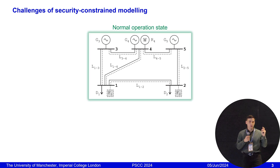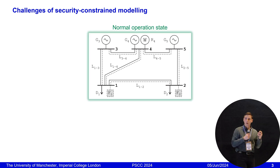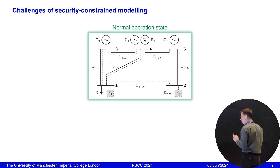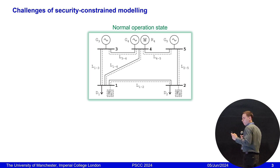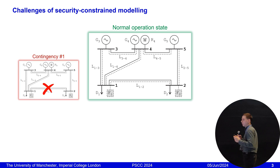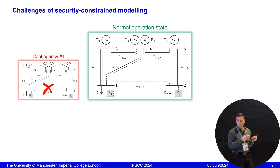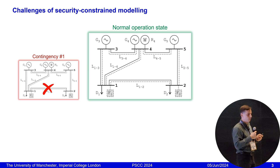I want to mention that this particular picture we can call a normal operation state, because all elements of the system will be working and all lines we are going to build are not failing. However, what happens if, let's say, line 1-2 fails? We need to assess the impact of this contingency — will there be any load curtailments or any problems? And we need to know that our system will withstand this contingency.